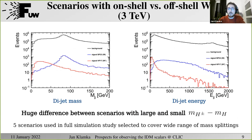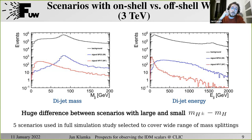Here I show distributions of kinematic variables: the dijet mass on the left and dijet energy on the right. The black histogram shows the sum of all standard model backgrounds. The blue and red histograms correspond to two selected signal scenarios. In the blue scenario, the produced W is on-shell and real. In the red scenario, the mass splitting is very small and the W boson is highly virtual. There is a huge difference between the shapes of these distributions, justifying why we choose a wide range of mass splittings for the five scenarios used in the full simulation analysis.